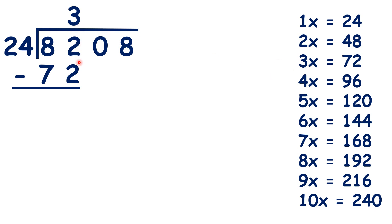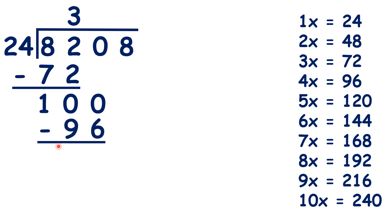82 minus 72 is 10, and we can bring down the 0, so that we have 100 divided by 24. Because 4 times 24 is 96, we can write 96 under the 100 and 4 in our answer.